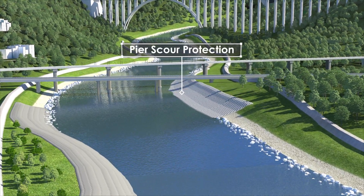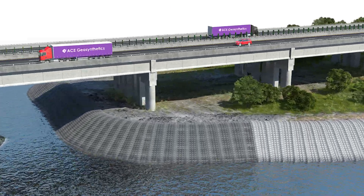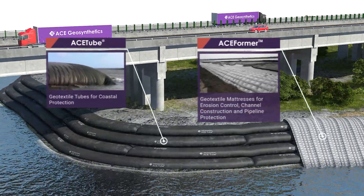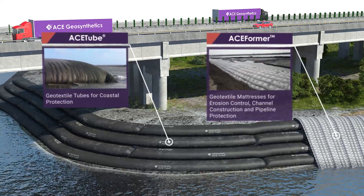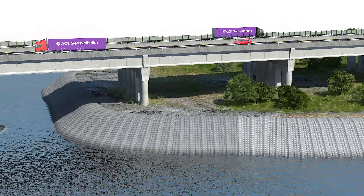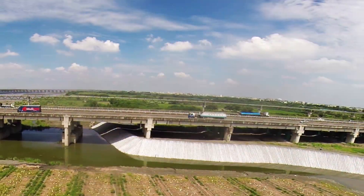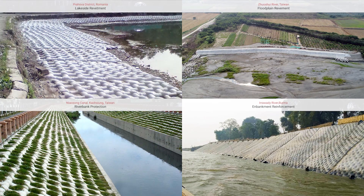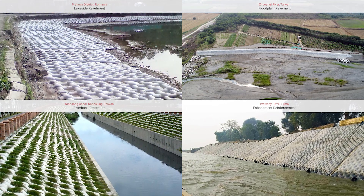Pier Scour Protection: Combining ACE-TEX geotextile tube and ACE-FORMER geotextile mattress forms a durable protection system that is highly effective against scouring of underwater structures. Because of its ability to conform to the structure and adapt to different geo-features, it greatly improves the anti-scouring ability and the durability of the entire system.